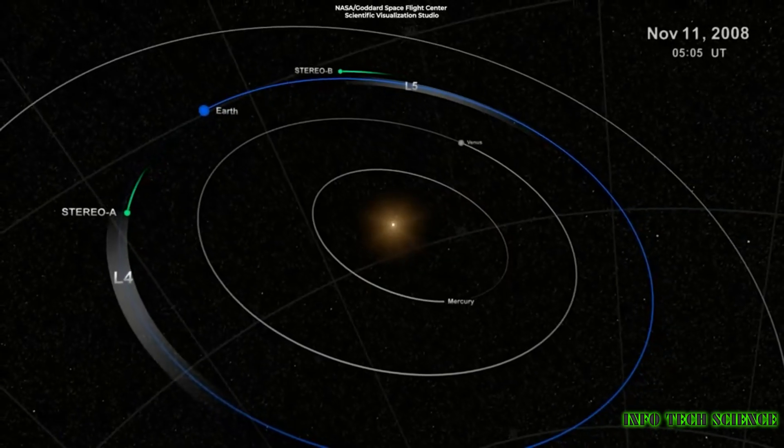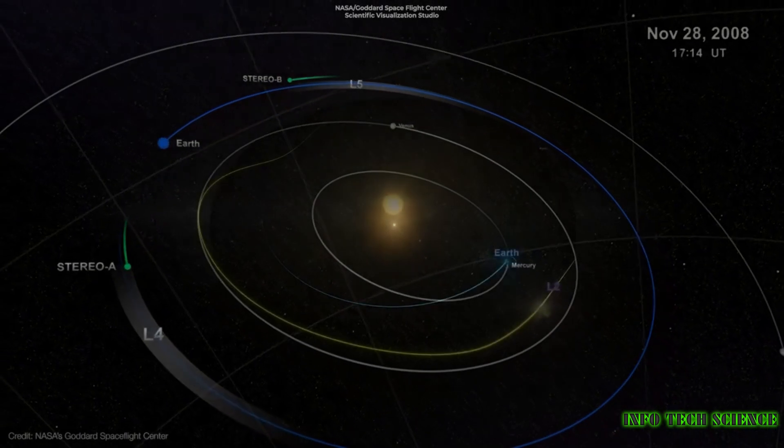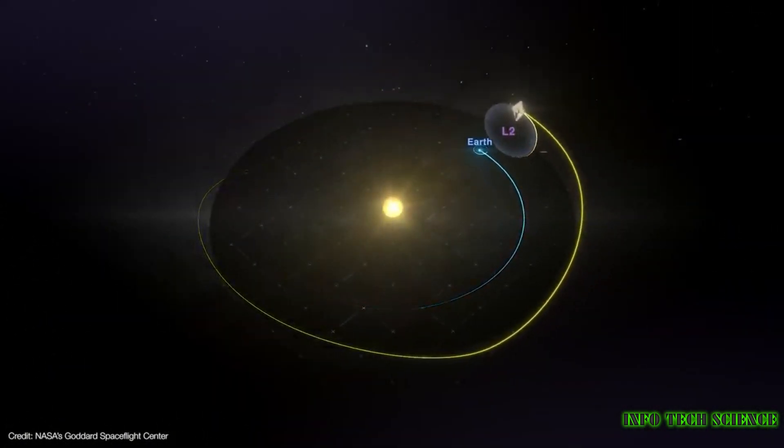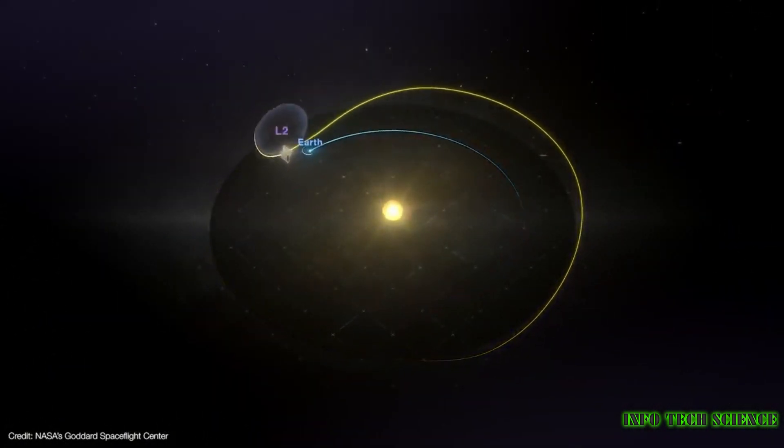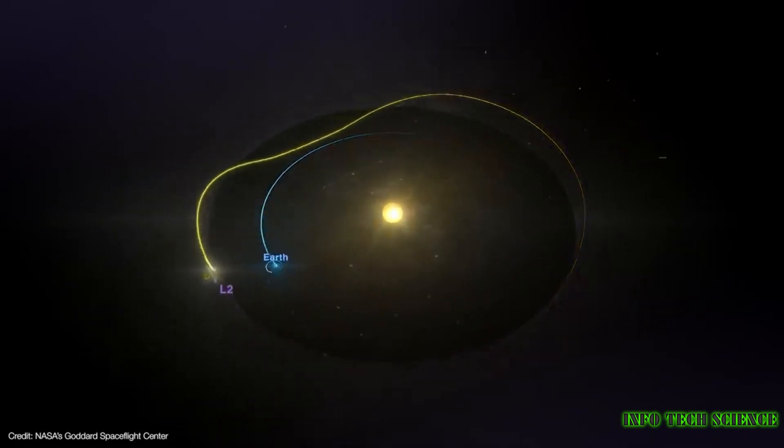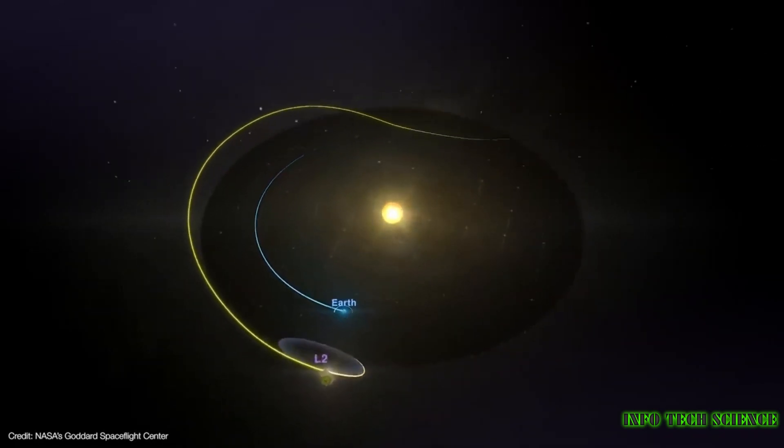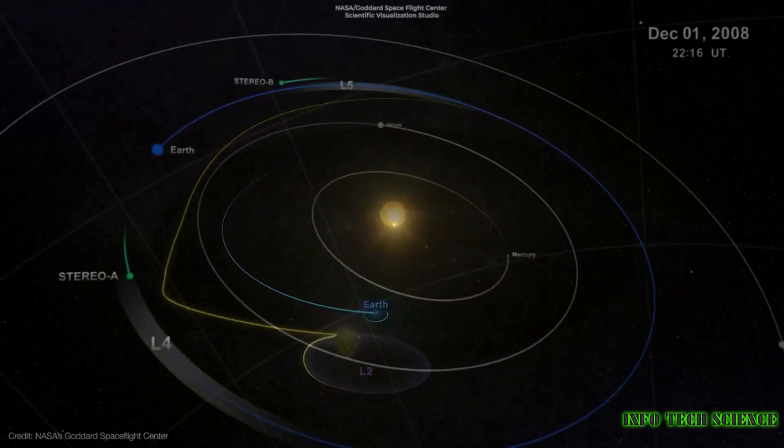L2 is a point where the gravitational forces of Earth and the Sun, as well as the centrifugal force due to the telescope's orbital motion, all balance out. Think of it as a celestial sweet spot. To maintain this delicate balance,